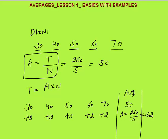If each observation is decreased by 2, or Dhoni could have scored two runs less in each of the innings, what would be the impact on average? The total will decrease by 10, total will become 240, and average would be 240 by 5 — average would be 48.